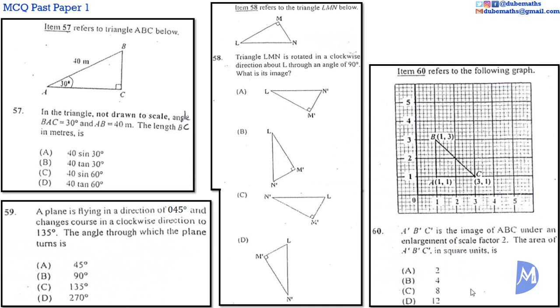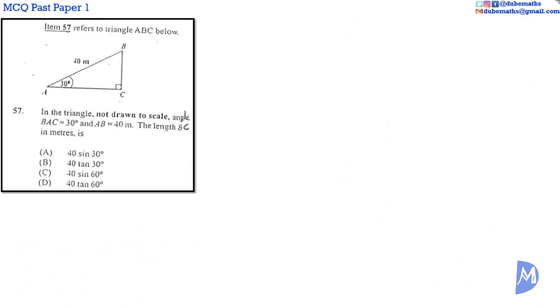Okay, let's go. Question 57. In this right angle triangle, we are given that the angle BAC is equal to 30 degrees. The length of the hypotenuse, the side opposite to the right angle, is equal to 40 meters. We are asked to determine the length of BC. BC is opposite to angle BAC.